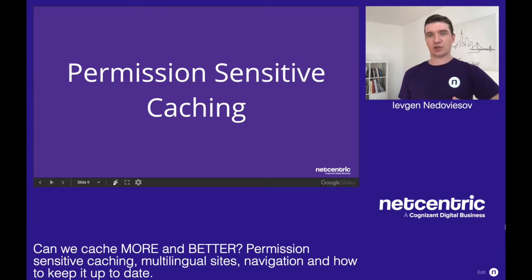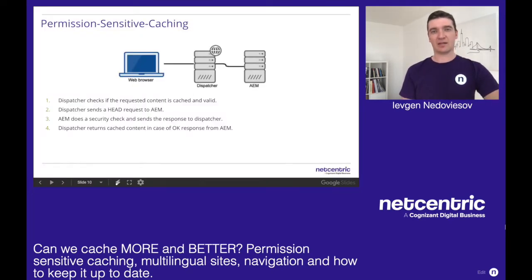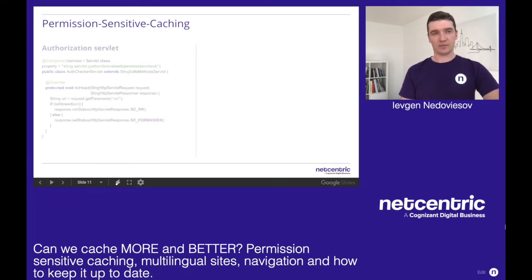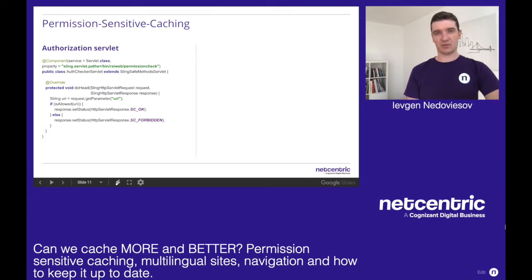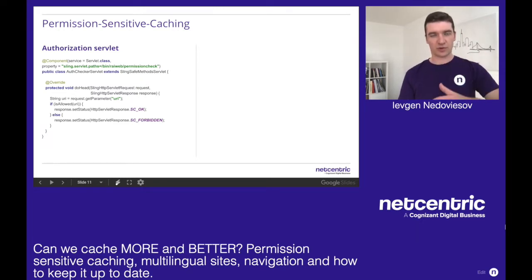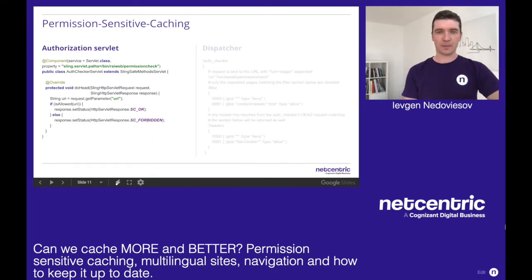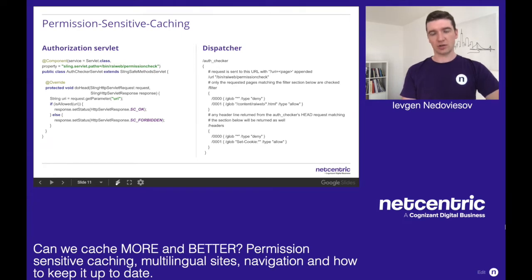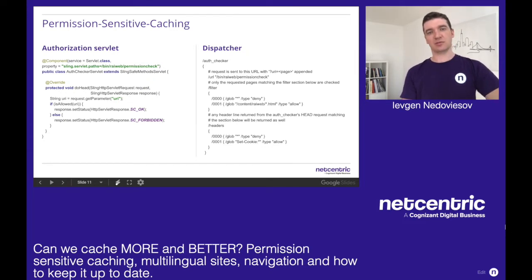But we can still cache using AEM and dispatcher and achieve it with the following configurations. For that we need two parts. One is an authorization servlet which serves HEAD requests from dispatcher to AEM and does a check — in our example it checks 'is allowed' and returns an OK response if the user has access to this resource, or returns a forbidden response if the user is not allowed to get the cached version. On dispatcher we have an auth check section with the URL of the servlet which serves our HEAD requests, with a filter section configuring what paths we want to check via this authentication checker and headers.